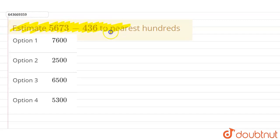For nearest 100, I have to check the ones and tens digit. Here the given question is 5673 minus 436.